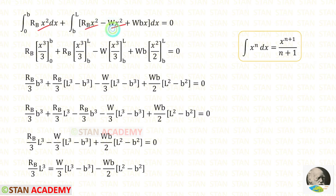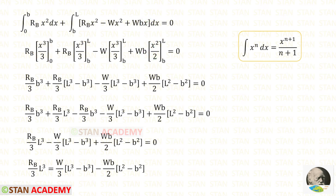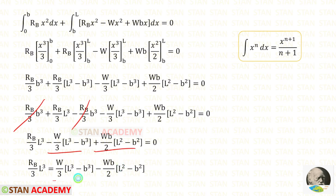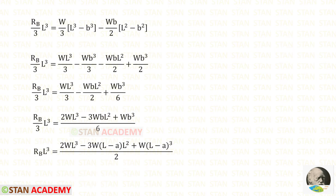Now using this formula we can perform the integration. Integrating X² gives X³/3, and integrating X gives X²/2. Let us apply the limits. For the first integral the lower limit gives 0, so no need to apply it. For the remaining integrals, applying both limits and multiplying RB/3 by (L³ − B³) gives the result. We can eliminate two terms and take the remaining two to the other side with a change of sign. Taking W/3 inside gives these terms.